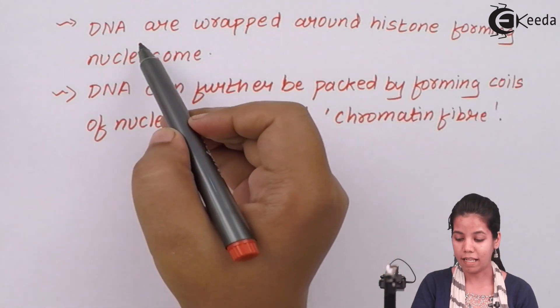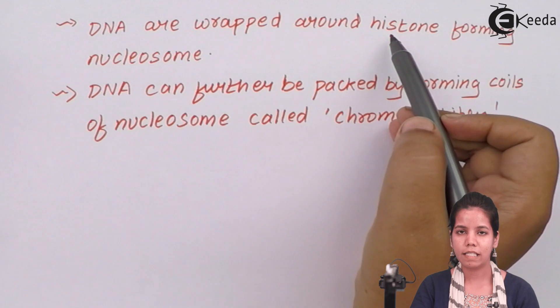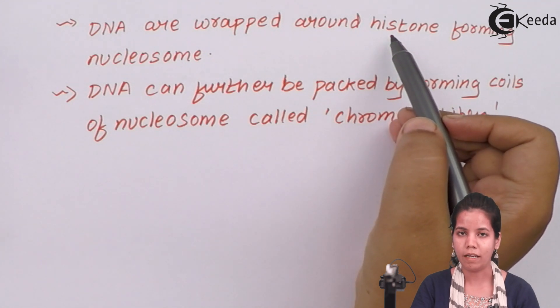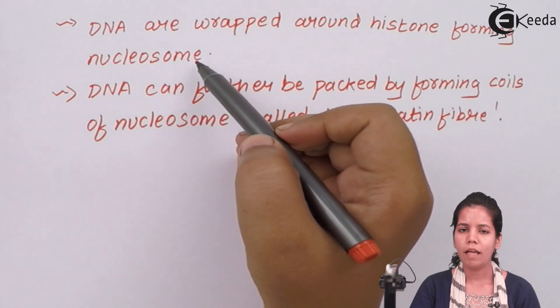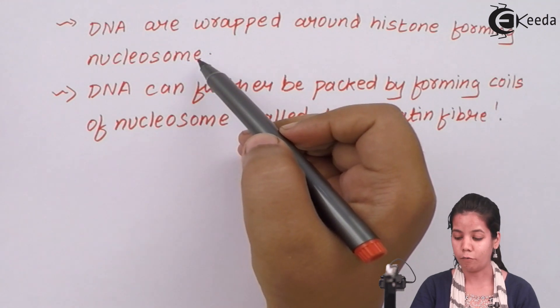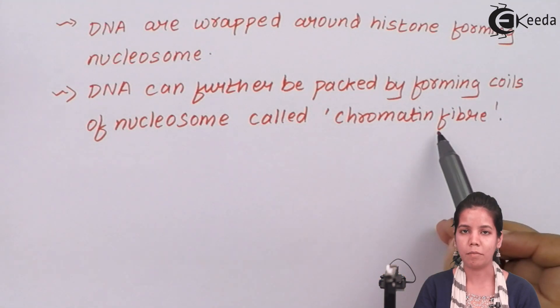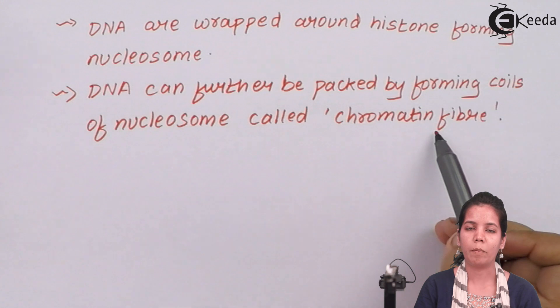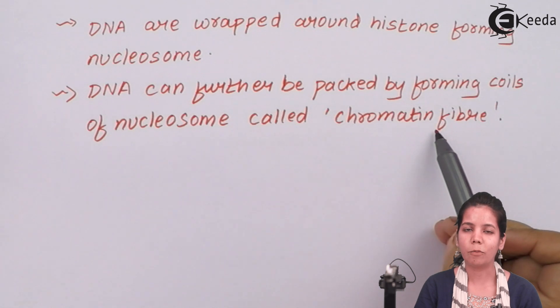DNA is wrapped around histone proteins and when this series or number of wrappings around DNA of histones is done, then it forms nucleosomes. When large number of nucleosomes are formed, further by packaging of nucleosomes, a series of chromatin fibers are formed and this series of chromatin fibers basically condense to form your chromosomes. We all know that 46 chromosomes are present inside a cell.